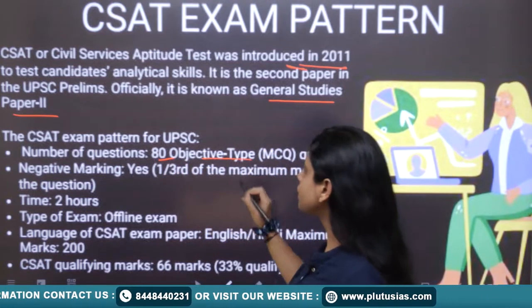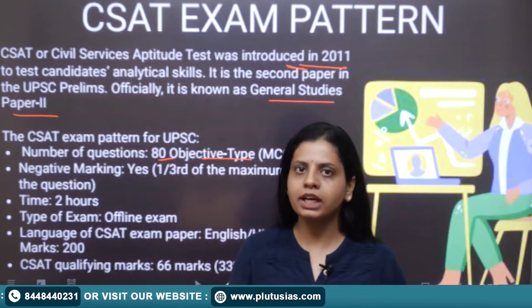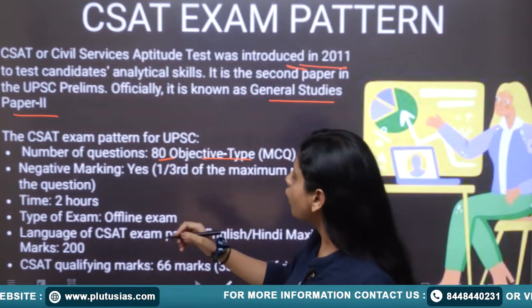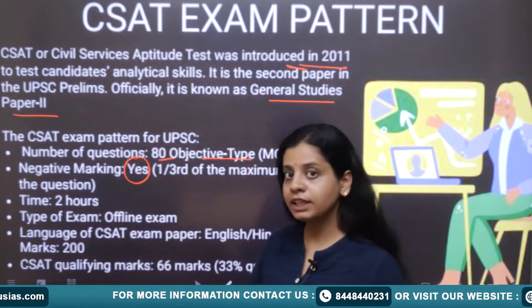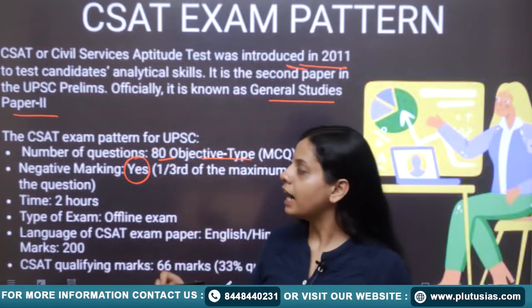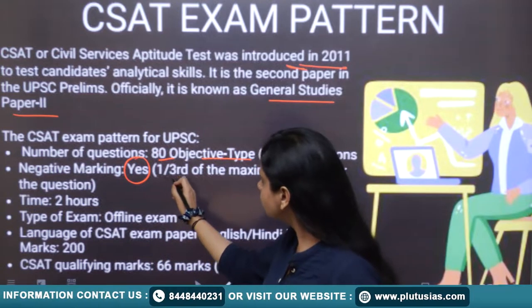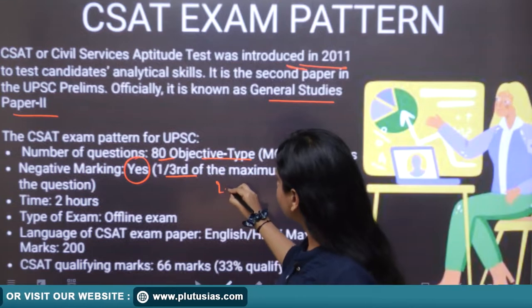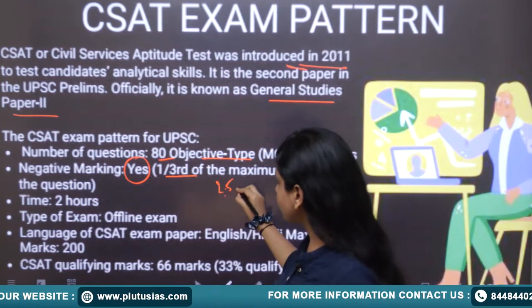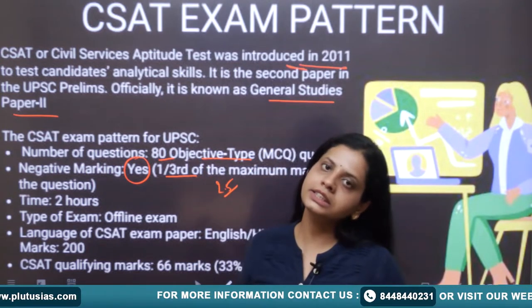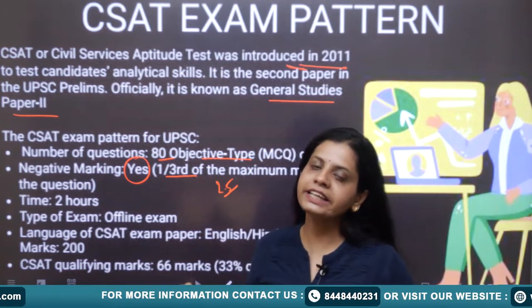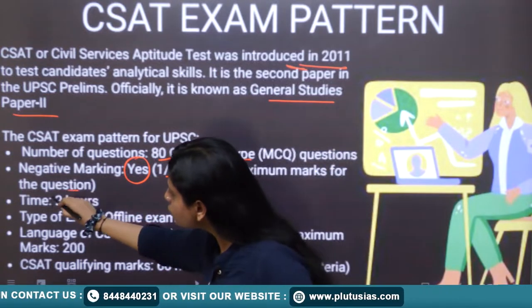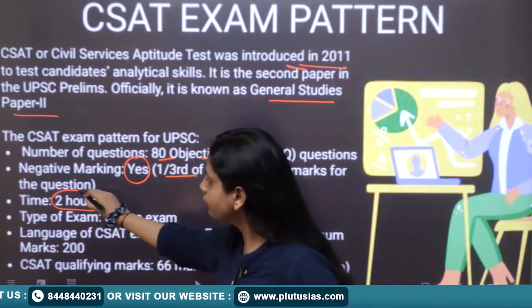All questions are MCQ type, or objective type. There is negative marking — one-third of marks will be deducted for a wrong answer. Each correct answer carries 2.5 marks, so one-third of 2.5 marks, which is 0.83, will be deducted for incorrect answers. The time given is two hours.